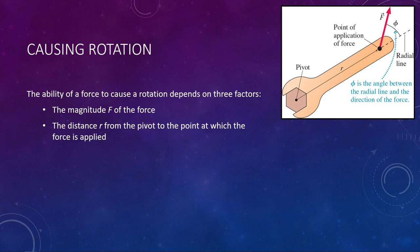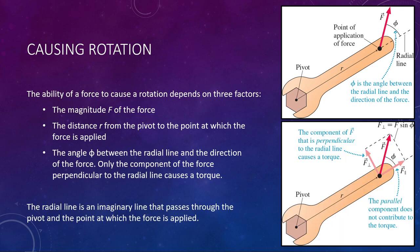It also depends on one more thing — the angle phi at which you push, visible in the diagram on the top right. By definition, phi is the angle between the force and the radial line. The radial line is an imaginary line that passes through the pivot point and the point at which the force is applied. So phi will always be the angle between that radial line and your force. In summary, it depends on three things: force F, distance R, and angle phi.